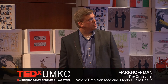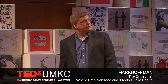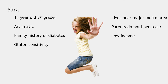I'd like to introduce you to a young woman that we'll think of as Sarah. Sarah's a 14-year-old 8th grader. She has asthma, she has a family history of diabetes, and she has gluten sensitivity. She lives near a major metropolitan area. Her parents don't have a car, and they would be considered a low-income family.